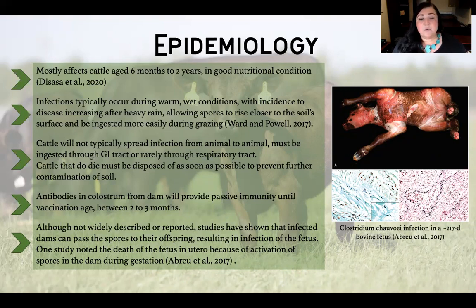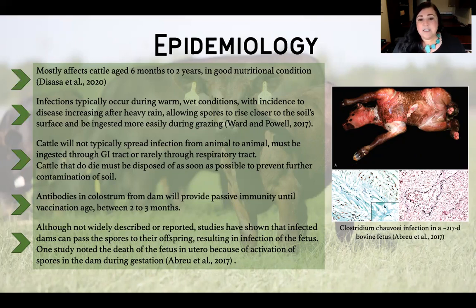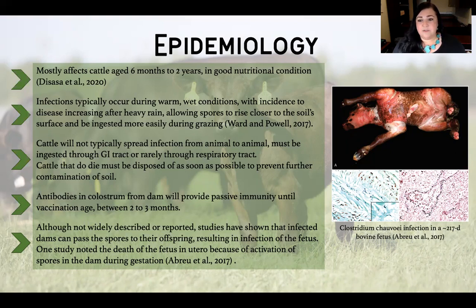Antibodies and colostrum from the dam will provide some passive immunity to that calf after it is born. As long as they got colostrum in their system, there is not a consensus as to how long that passive immunity will last, so vaccination is key once they get a few months of age. Although it is not widely described, there is a study showing that infected dams will pass those spores to their offspring, and if the dam were to have activation of those spores in her body, she will pass that to the calf as well. That's what happened to the calf on the right as you see in that image — Clostridium chauvoei spores overtook that fetus at about 217 days in correspondence with the dam's expiration.